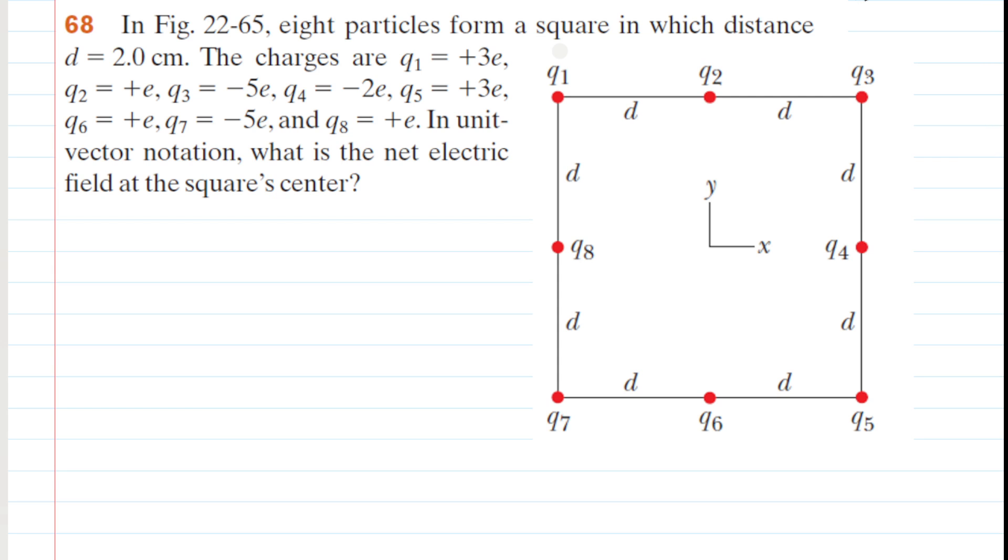In this figure we have eight particles that form a square in which a distance d is given, and then the charge of each of the eight particles is given. In unit vector notation, we need to find the net electric field at the square's center. Looks a little daunting at first, but let's take a careful look at the diagram.